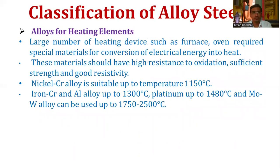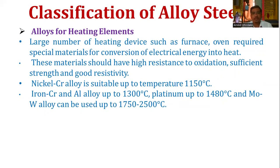The next classification covers alloys for heating elements. A large number of heating devices such as furnaces and ovens require special materials for conversion of electrical energy to heat. These materials should have high resistance to oxidation, sufficient strength, and good resistivity. Nickel-chromium alloy is suitable up to 1150°C, iron-chromium-aluminum alloy up to 1300°C, platinum up to 1480°C, and molybdenum-tungsten alloy can be used up to 1750°C to 2500°C.